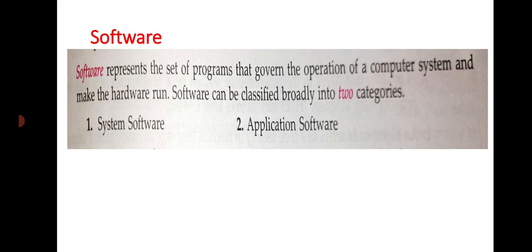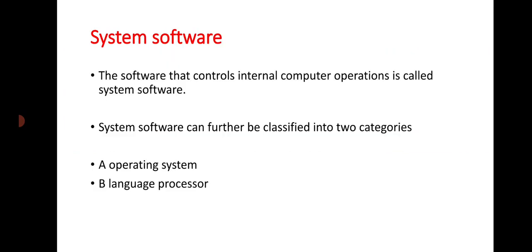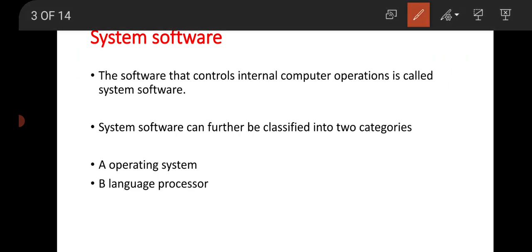The first category is system software. System software controls internal computer operations. System software is used for the internal operation of the computer — these are machine-based software. System software can further be classified into two categories: first is the operating system and second is the language processor.